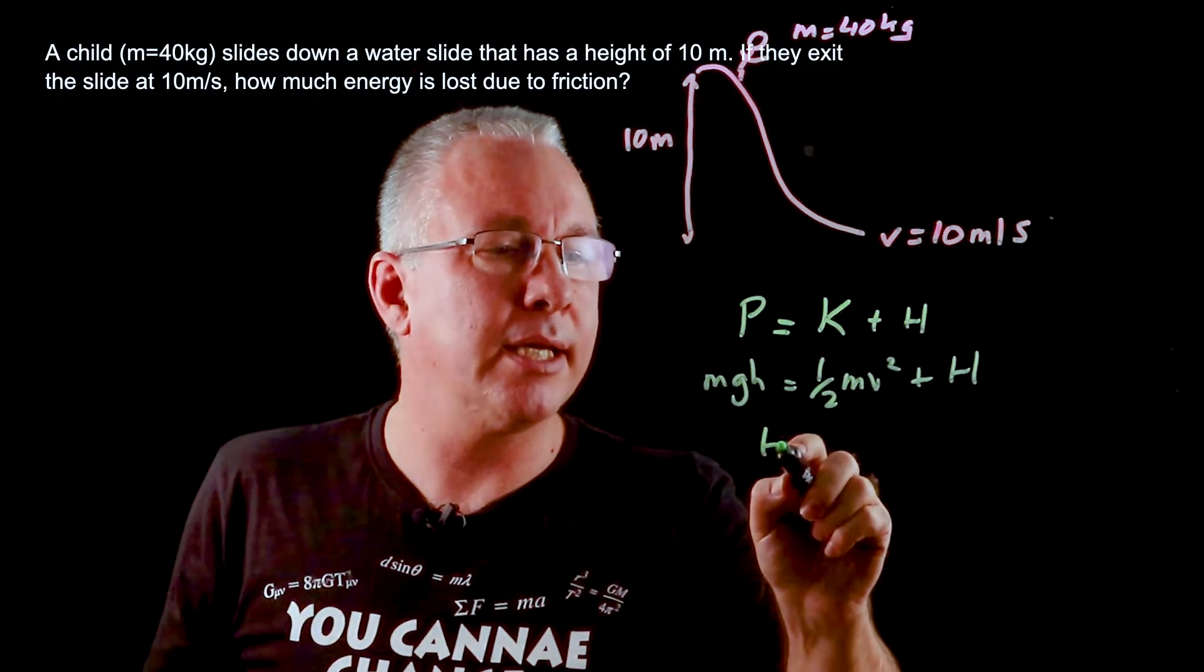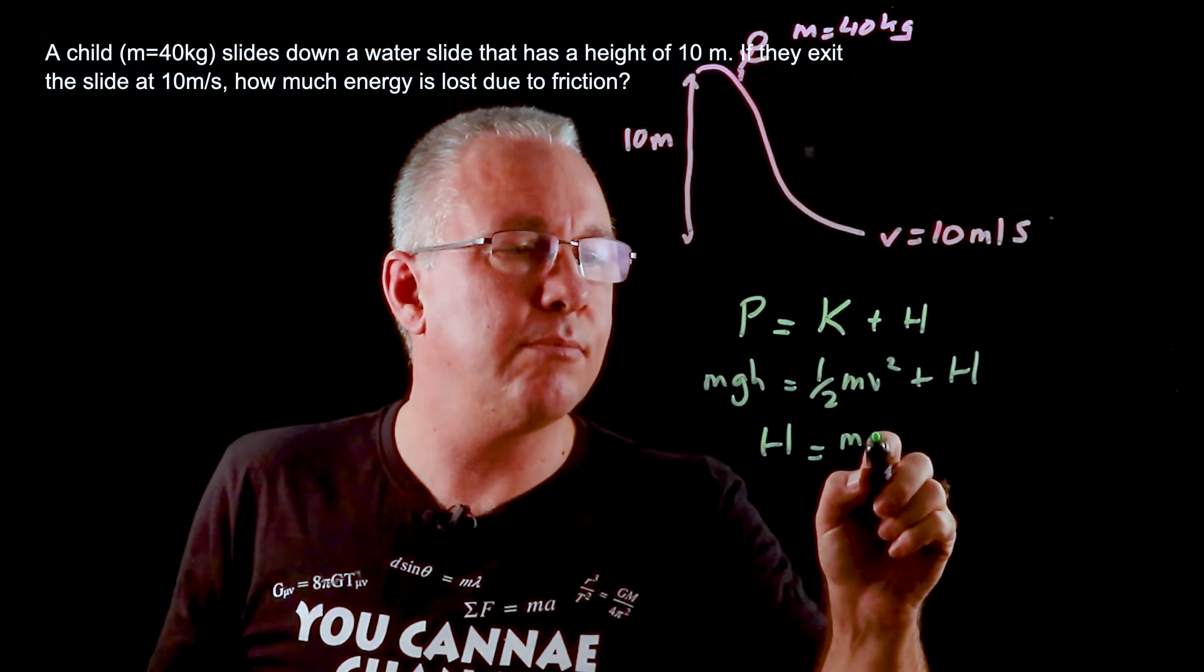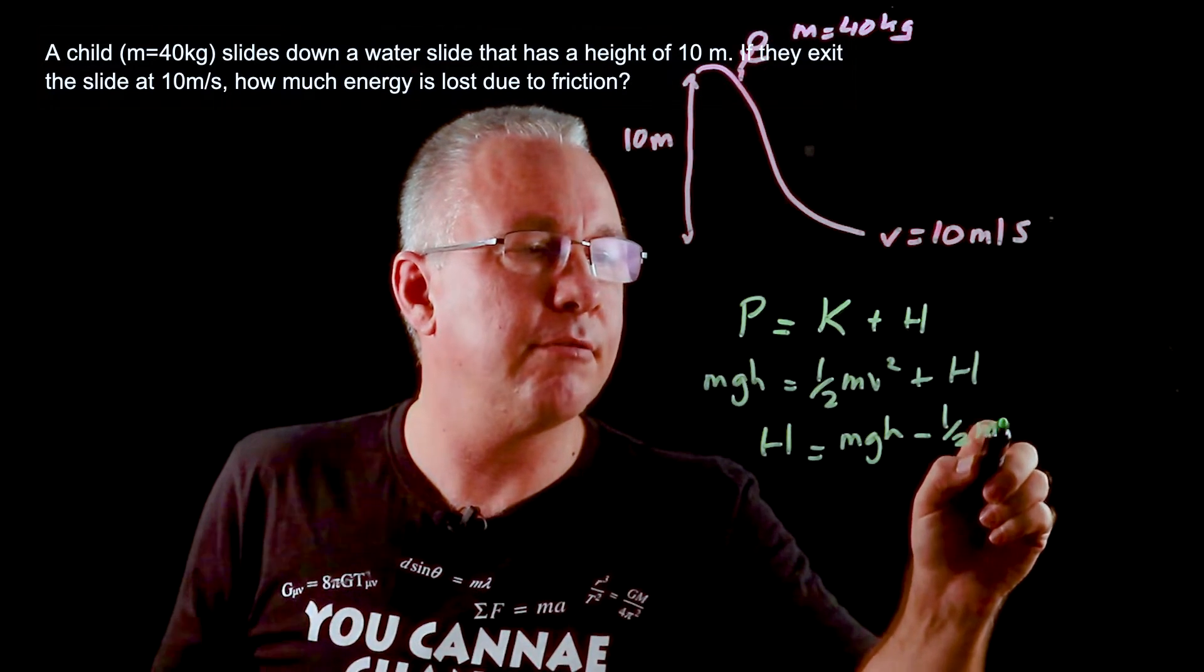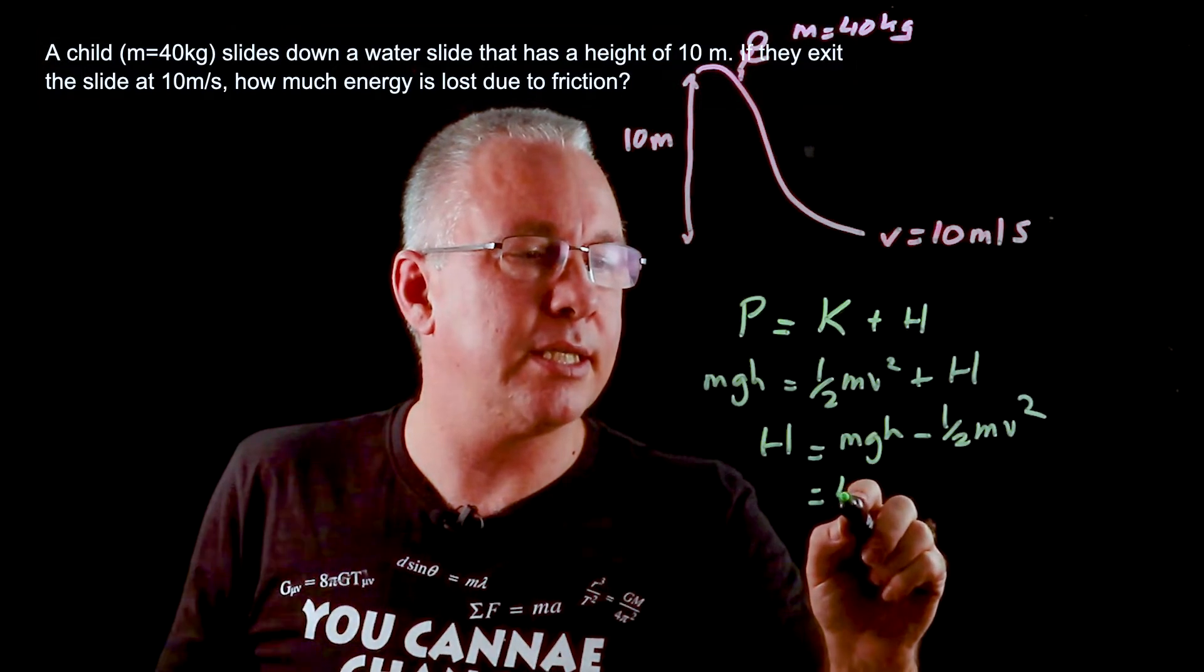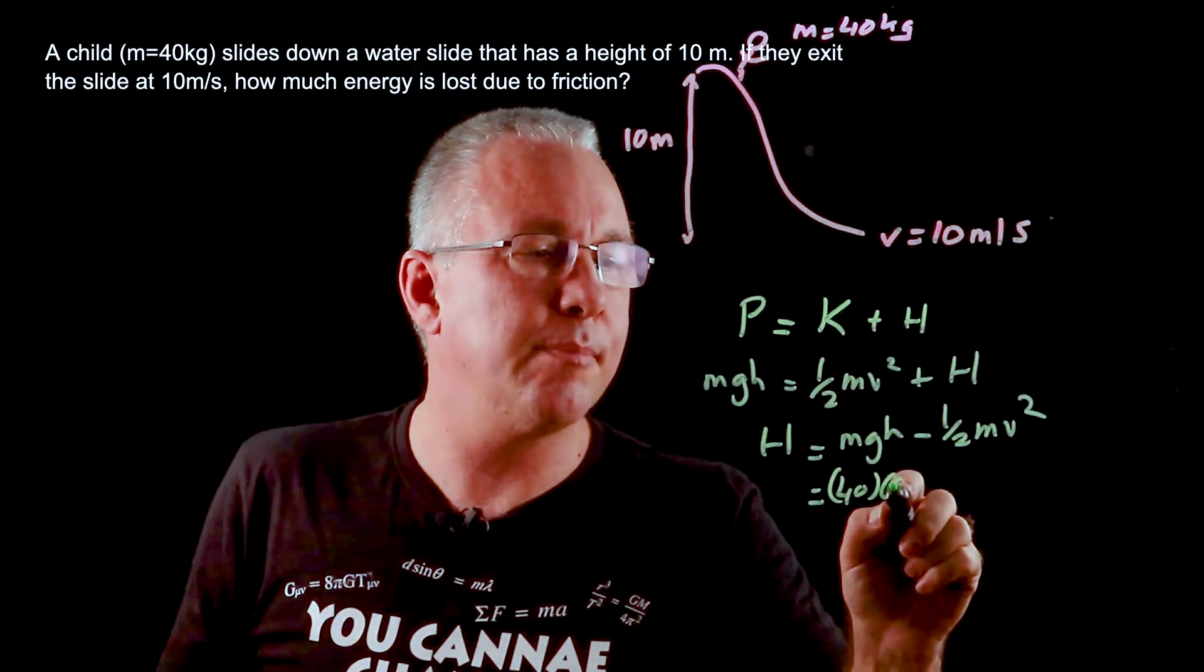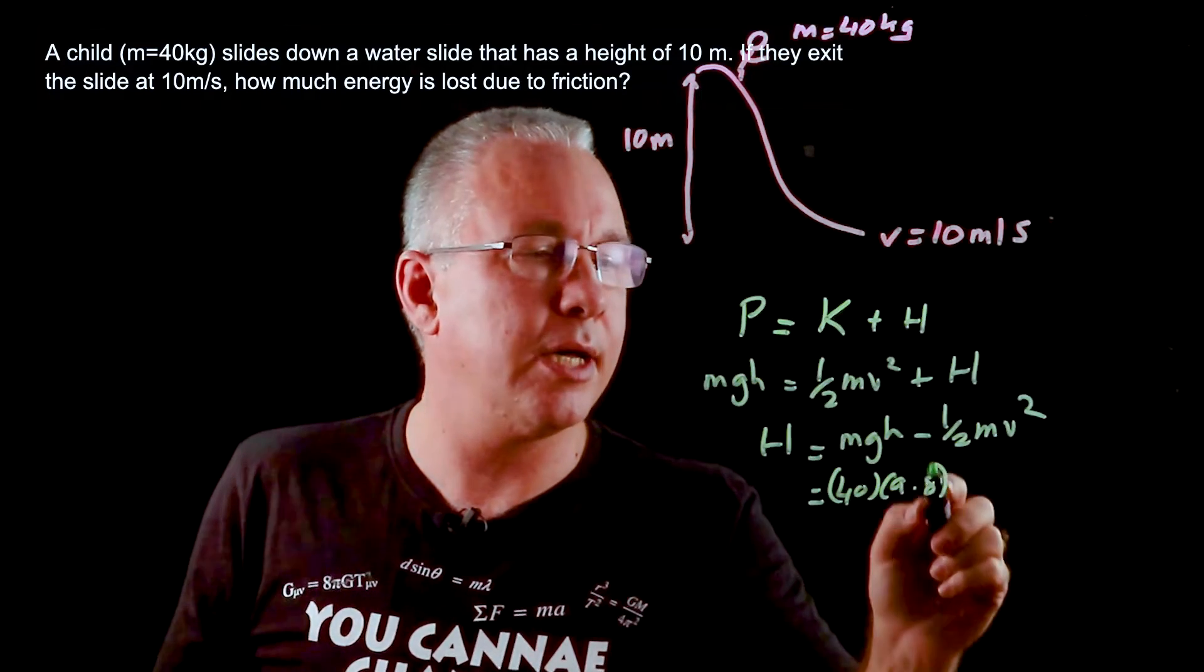So if I rearrange that I get H equals mgh minus a half mv squared. We now just have to substitute everything in and so what we get is 40 multiplied by 9.8 multiplied by the height which is 10.